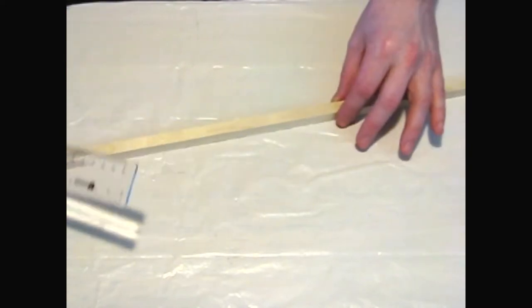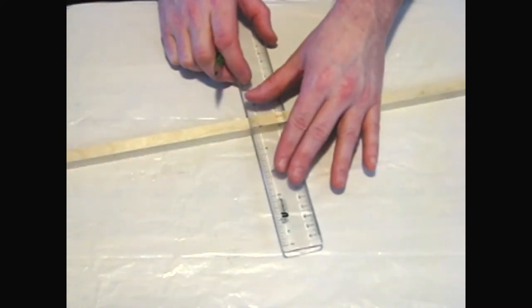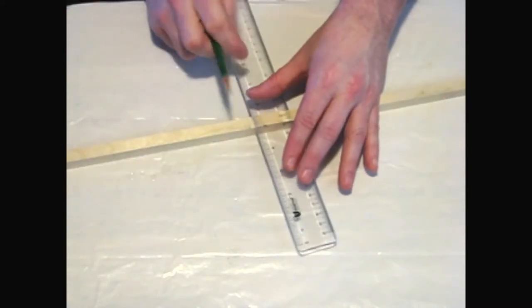However, canvas board can warp and using longer lengths of rod helps to minimize or even prevent any warping.